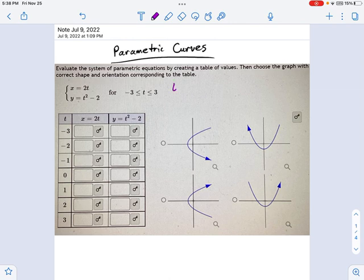So as an example, t equals negative 3. Let's plug that in, see what we get. So x equals, from our equation, 2 times t. So that's 2 times negative 3, which means negative 6. Great. And y equals, let's see, t squared. So that's negative 3 squared minus 2. Now that's going to be 9 minus 2, and that's just equal to 7.